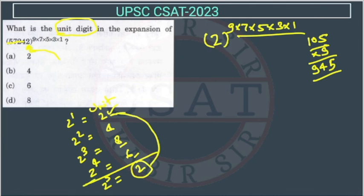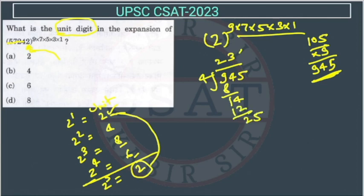Now after power 4, the unit digit will start repeating, so we will see how many fours can come in this. We will divide 945 with 4. So what we will get? 4 goes into 9 one time, this will go 3 times, so this will be 25 then 6, so 1 is remaining.